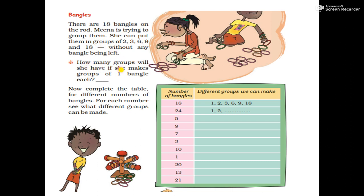How many groups will she have if she makes groups of one bangle each? She will have 18 groups, because there are 18 bangles. Now complete the table for different numbers of bangles. For each number, see what different groups can be made. We can make 1 group with 18 bangles, 2 groups of 9 each (since 9×2=18), 3 groups of 6 each (since 6×3=18), 6 groups of 3 each (since 3×6=18), 9 groups of 2 each (since 2×9=18), and 18 groups of 1 each.